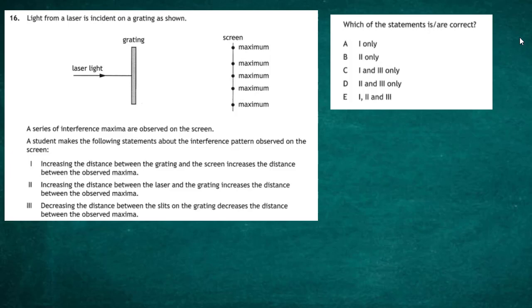Question 16 from Paper 1 of the 2022 Higher Physics Examination from the SQA. Light from a laser is incident on a grating as shown. A series of interference maxima are observed on the screen, and a student makes three statements about the interference pattern: one, increasing the distance between the grating and the screen will increase the distance between the observed maxima; two, increasing the distance between the laser and the grating will increase the distance between the observed maxima; and three, decreasing the distance between the slits on the grating decreases the distance between the observed maxima.